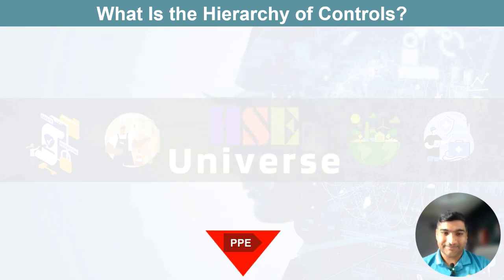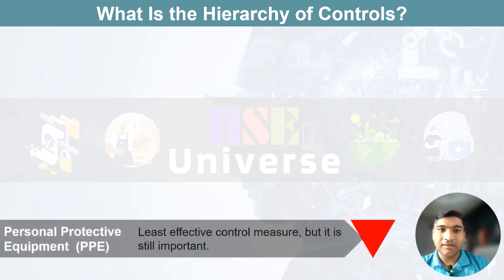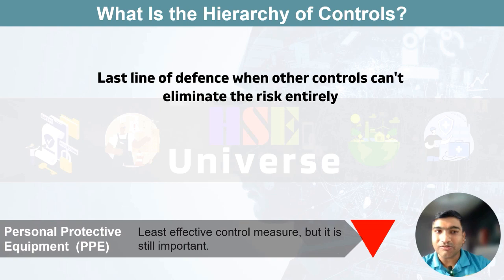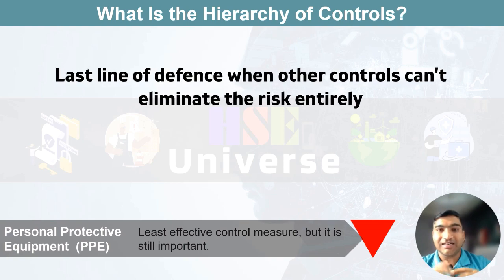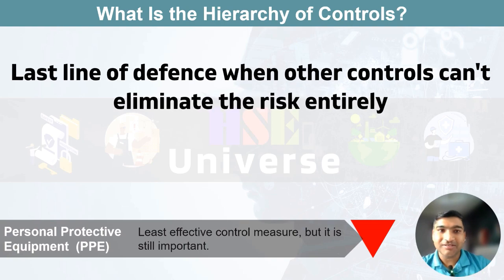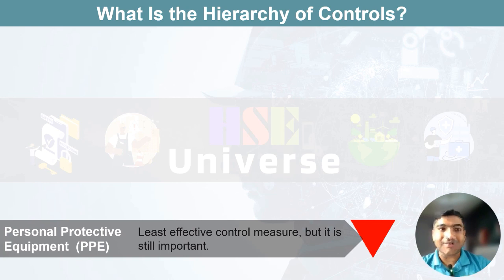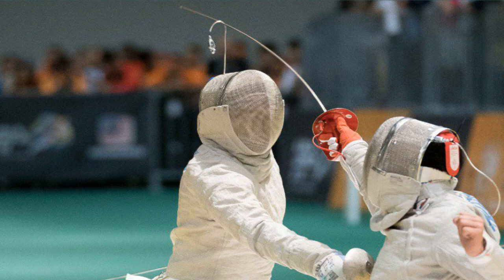Last but not least, we have personal protective equipment, or PPE. This is the last line of defense when other controls can't eliminate the risk entirely. Sometimes higher level controls are not feasible and PPE might be needed in conjunction with other control measures. Think of it as your safety armor.